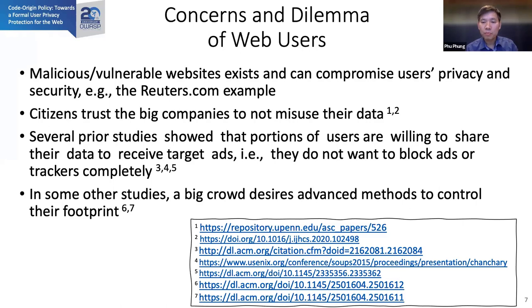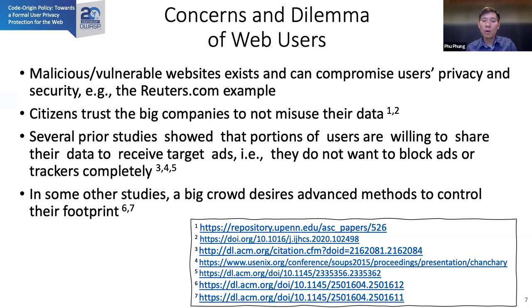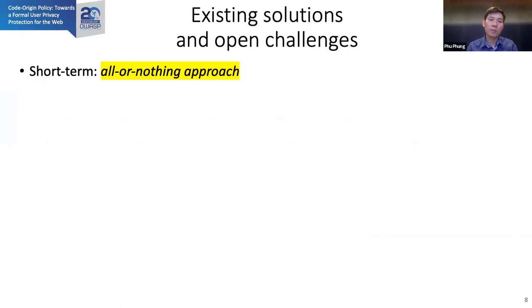This is the dilemma for web users. On one hand, you want protection; on the other hand, you want to receive useful information — for example, AI-driven services in web 3.0. So what are the current solutions for these scenarios? Let me review some current approaches.